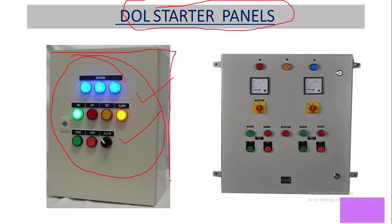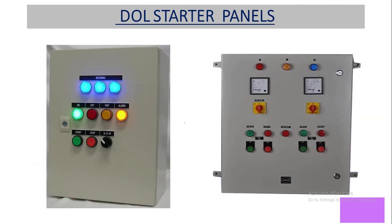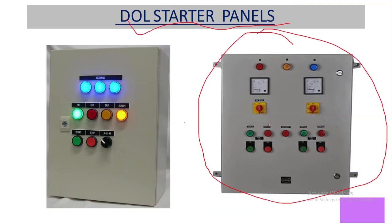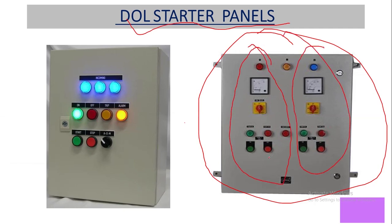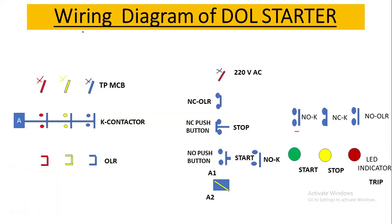Inside the DOL starter panel cabinet, we have DIN rails, a main MCB or isolator, a three-phase contactor, a thermal overload relay, and terminal blocks. Some panels also have two sets of starters to operate two separate motors individually, and may include an ammeter and voltmeter to indicate actual current and voltage values.